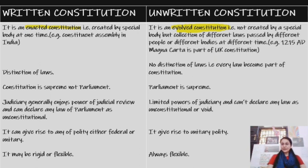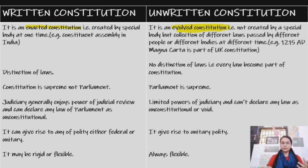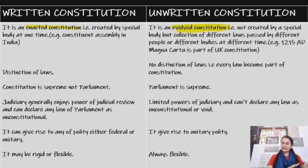For example, Britain. In 1215, the Magna Carta was passed by the ruler, which shows the evolved constitution. The key point here is that Britain was never colonized by another power, so they never needed to make a new constitution — their old laws were kept intact. But India was a British colony, so we decided to make our own constitution for India and its people. That is an enacted constitution.